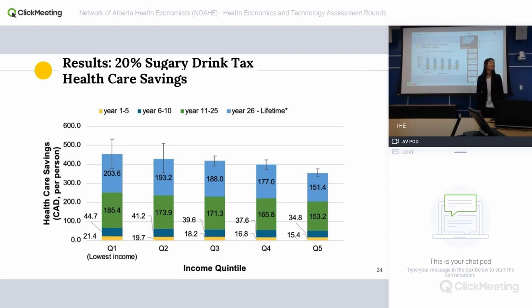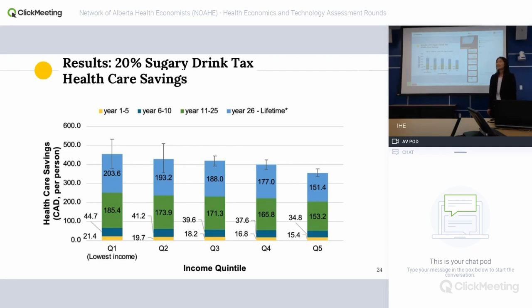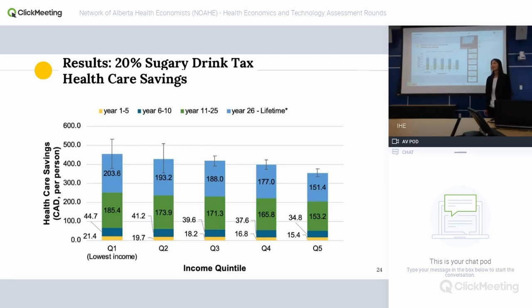The Heart and Stroke Foundation's interest is in using that revenue to subsidize healthy interventions. That's actually what they originally asked Kai to model — the tax and also how you could spend the revenue. That's something we didn't have time to do given this is an MSc, not a PhD. But it could potentially turn the financial effect from a regressive tax into a progressive tax if you spend the revenue well.